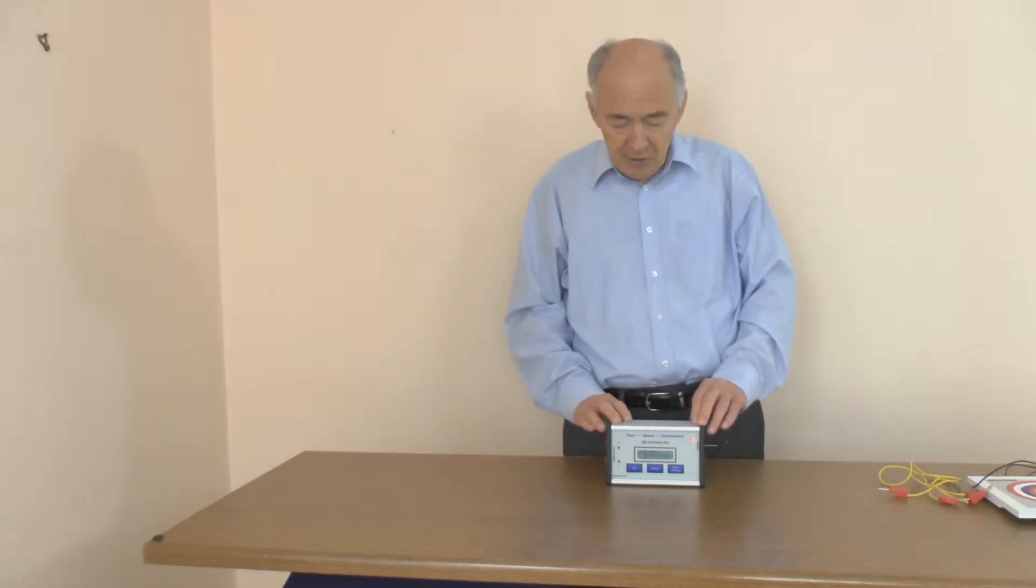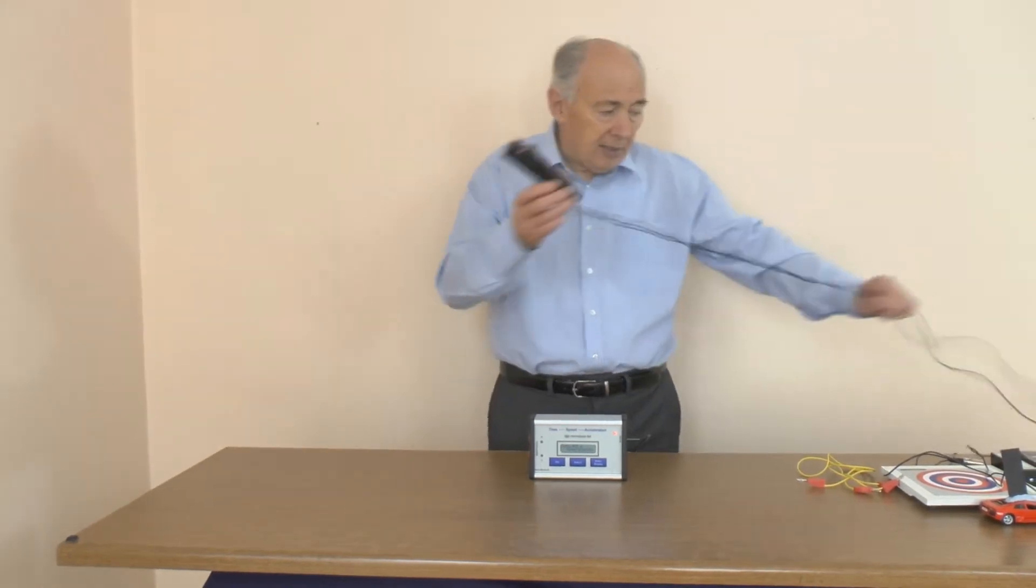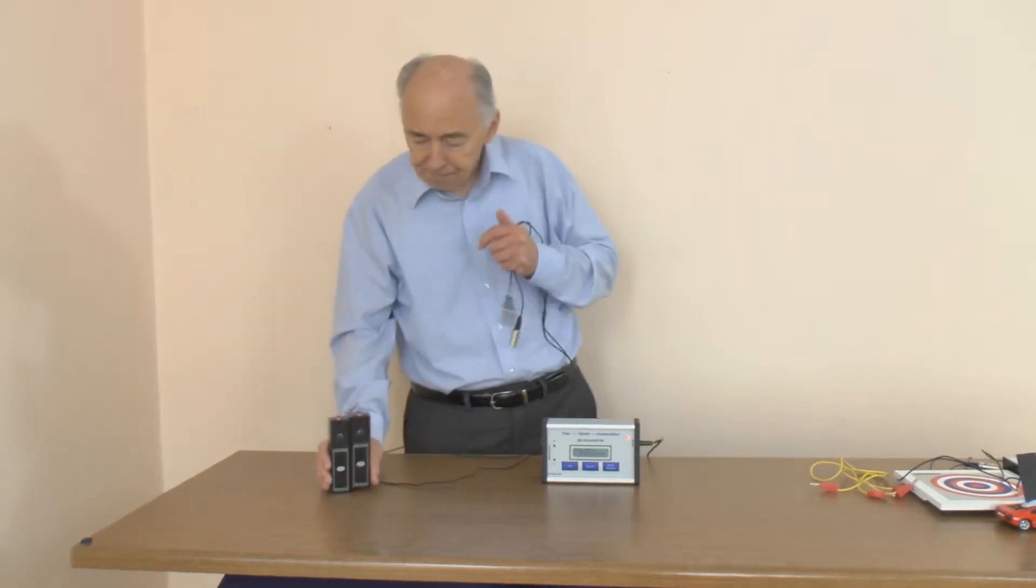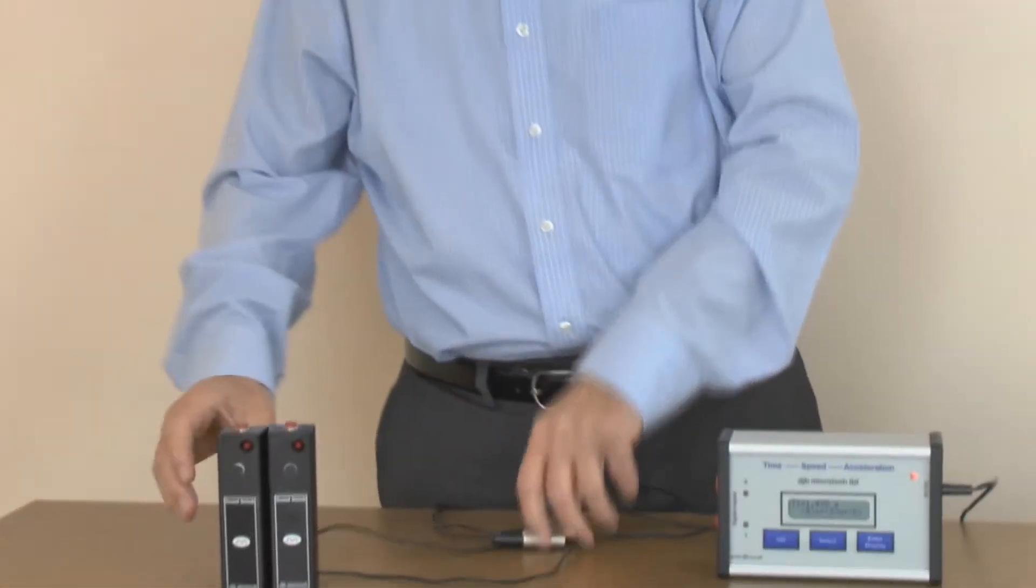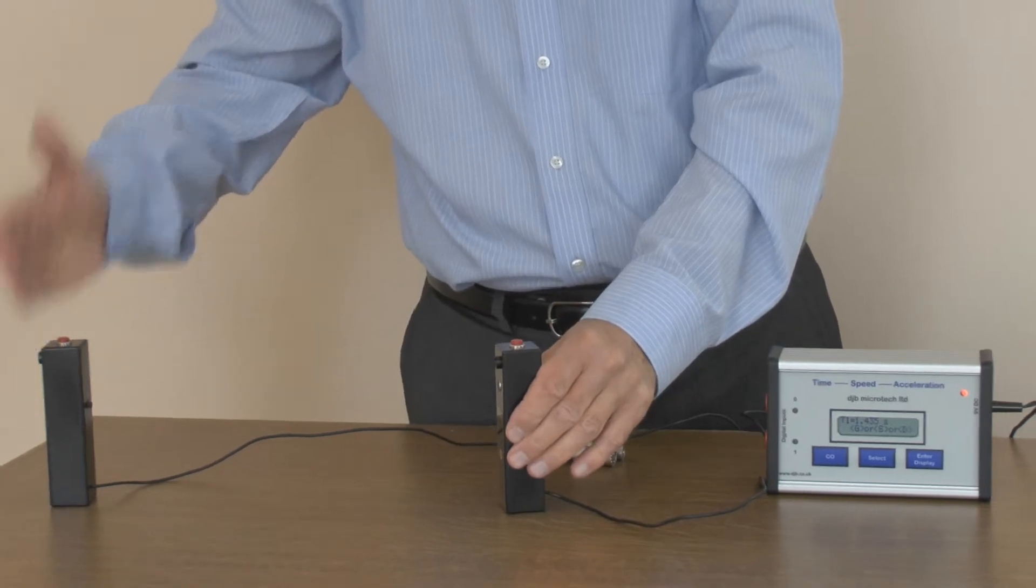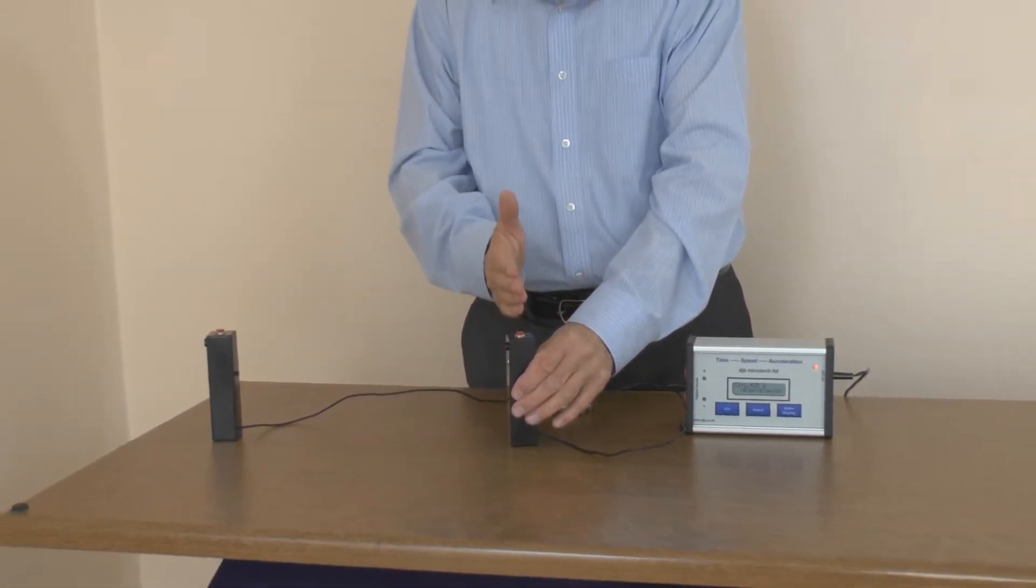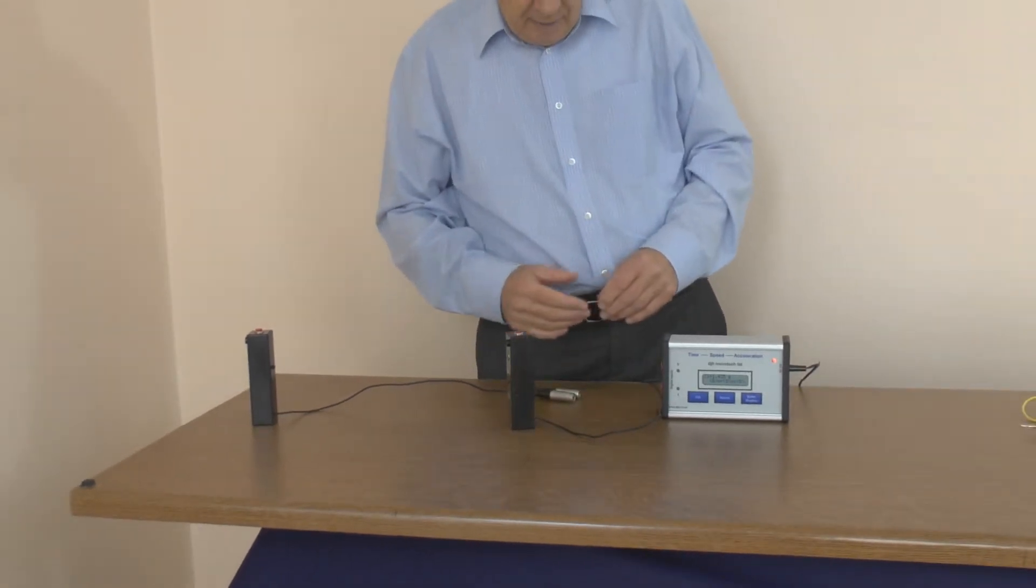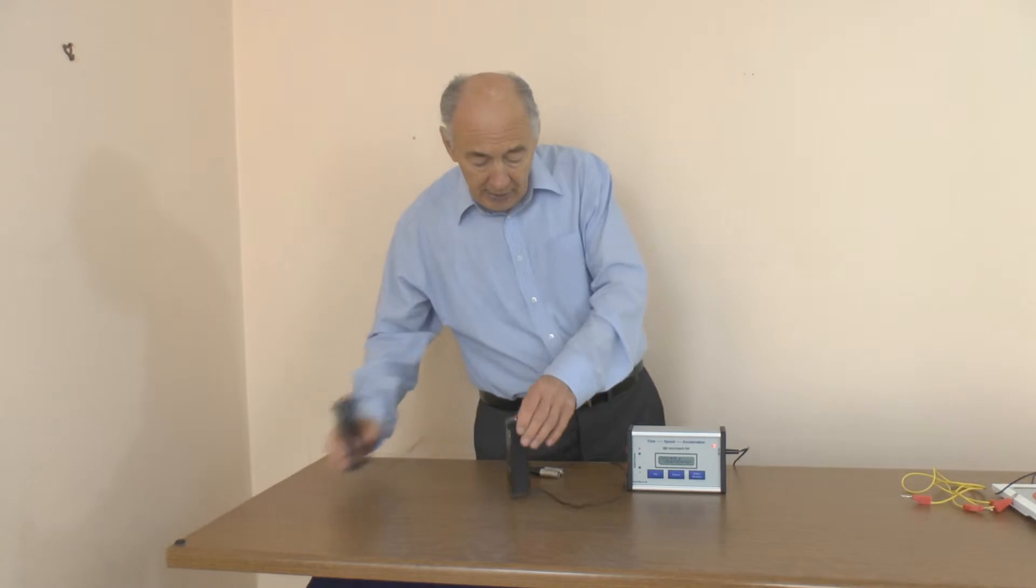The fast timer measures down to tens of microseconds, and we can take our sound switches, connect them in here, and placing them a meter apart. The sound would come up, hit this, trigger it, start the clock, hit this one and stop the clock. There is a video on our website showing that in action.